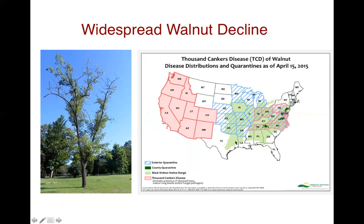This map shows the native range of black walnut in green, and those states out west that are affected by TCD, and then the ones outlined in pink in the east are those that have been confirmed to have TCD. In response, there have been a lot of external quarantines placed on those eastern states.